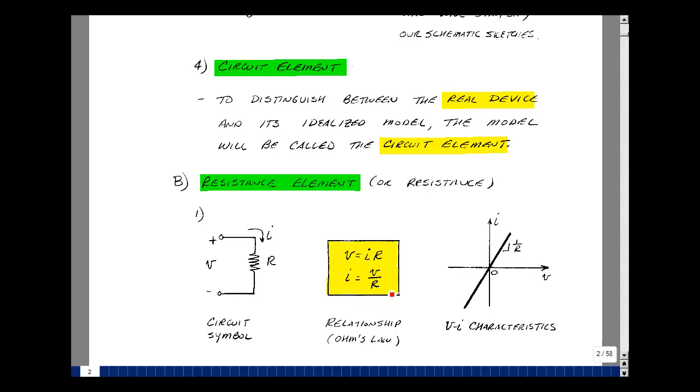These two equations are called Ohm's Law, and they were first observed by a German physicist and mathematician named George Simon Ohm.